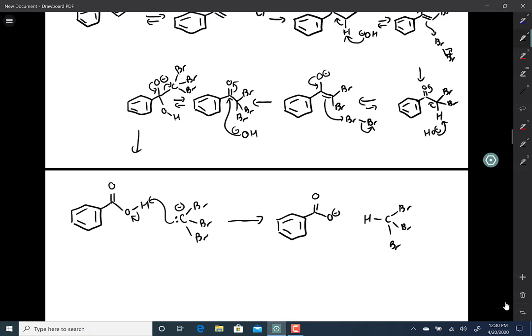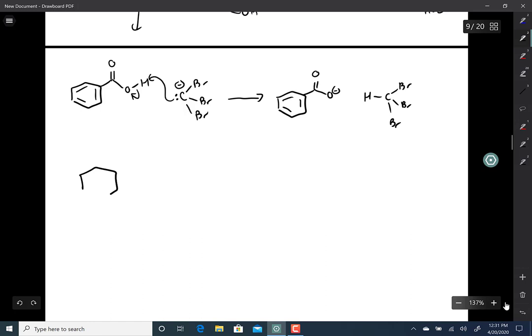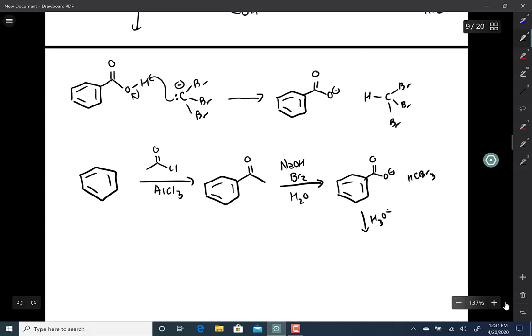So what the haliform reaction is good for is it's another way of putting a carboxylic acid onto a benzene ring. But it's not a direct method of doing so. First thing to do is do a Friedel-Crafts reaction, and then treat this with these conditions, and that ends up giving you the carboxylate and bromoform.